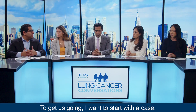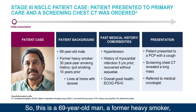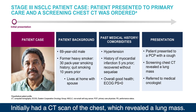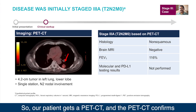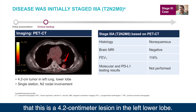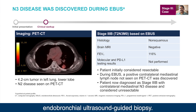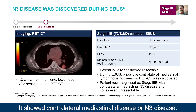To get us going, I want to start with a case. This is a 69-year-old man, a former heavy smoker, who presented to his primary care physician with a cough. He initially had a CT scan of the chest, which revealed a lung mass. Our patient gets a PET-CT, and the PET-CT confirms that this is a 4.2-centimeter lesion in the left lower lobe. This patient had a biopsy — an EBUS endobronchial ultrasound-guided biopsy — which showed contralateral mediastinal disease, or N3 disease.